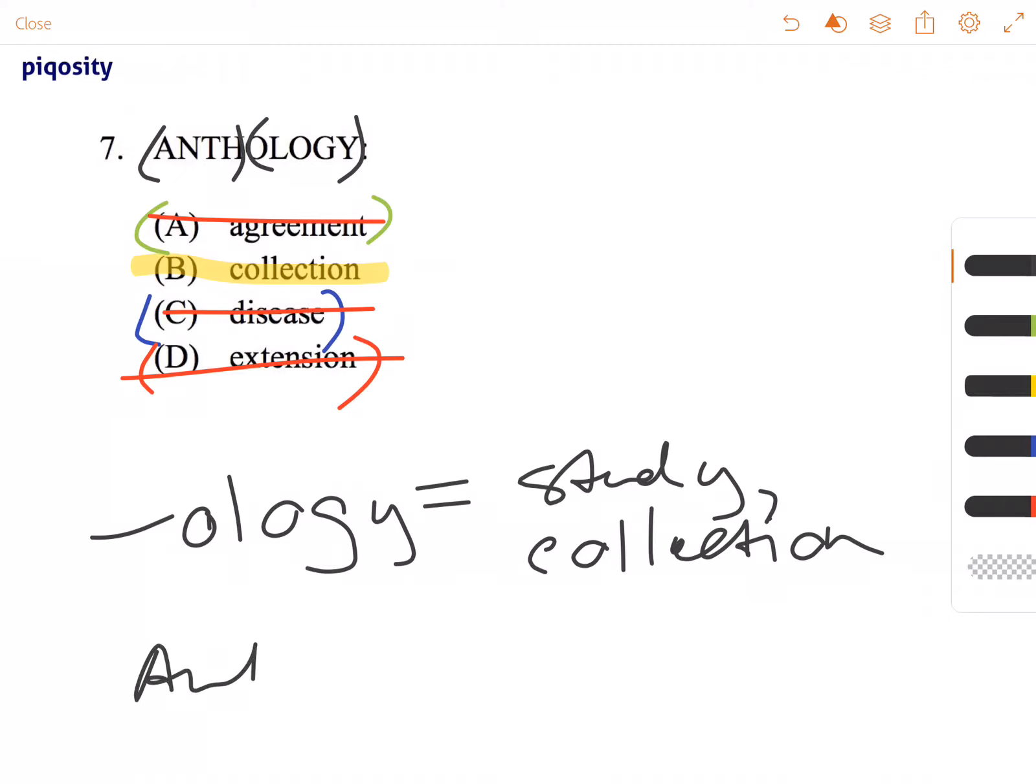And then anth originally meant flowers, but then it took on a figurative sense meaning poems. So a collection of poems, and then over time, a collection of written work. So our answer choice for anthology is B, collection.